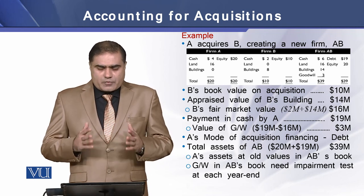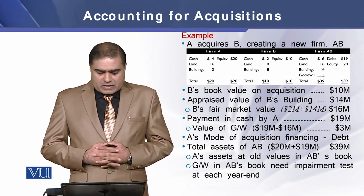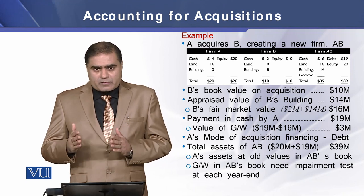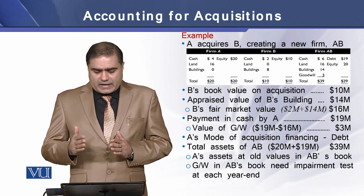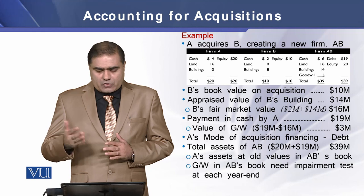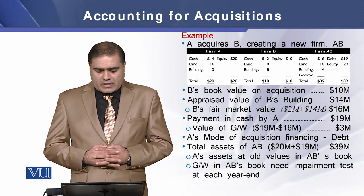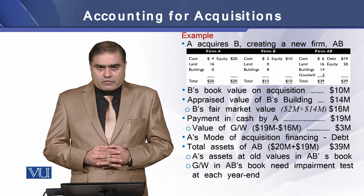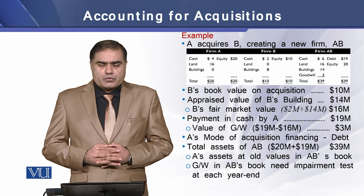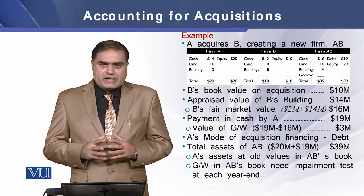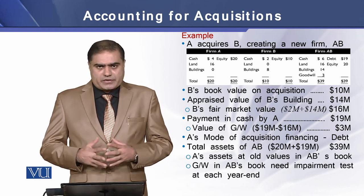So far as reporting is concerned, A's assets will appear in the new firm's books at their new values, whereas goodwill in the new firm's books will be required to be tested for an impairment loss at each year end.